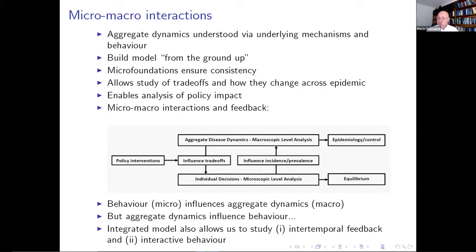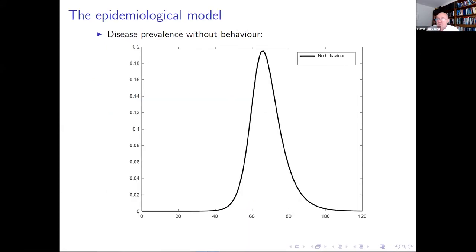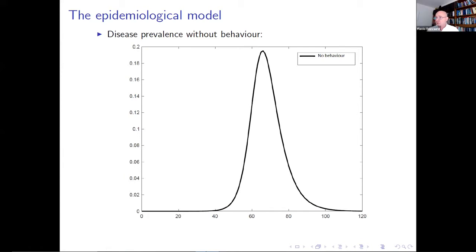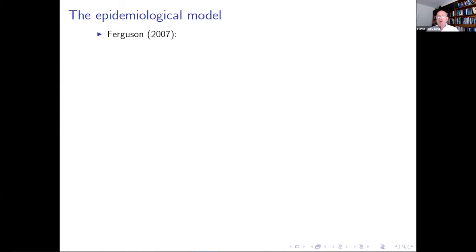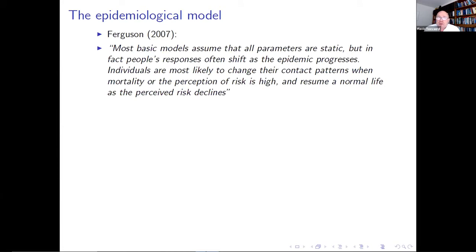Let me show you the toy model. We start from the number of infected people in a standard SIR model — this is just the usual peak, a no-behavior standard model with no decision making, just a mechanistic model. As our friend Ferguson pointed out in 2007, most basic models assume that parameters are static, but people's responses often shift as the epidemic progresses — people are likely to protect themselves more when things look grim than when things look better. That's the kind of thing we want to capture.